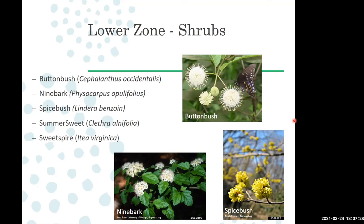Most plants on the list do best in full sun but can take some part shade. Plants that can handle full sun and part shade will survive in part shade, but they'll typically flower less and not grow as much since they're getting less sunlight — that's the trade-off. If you've got that space, you'll get some flowers and the plant will grow a little slower, but will still survive and thrive.